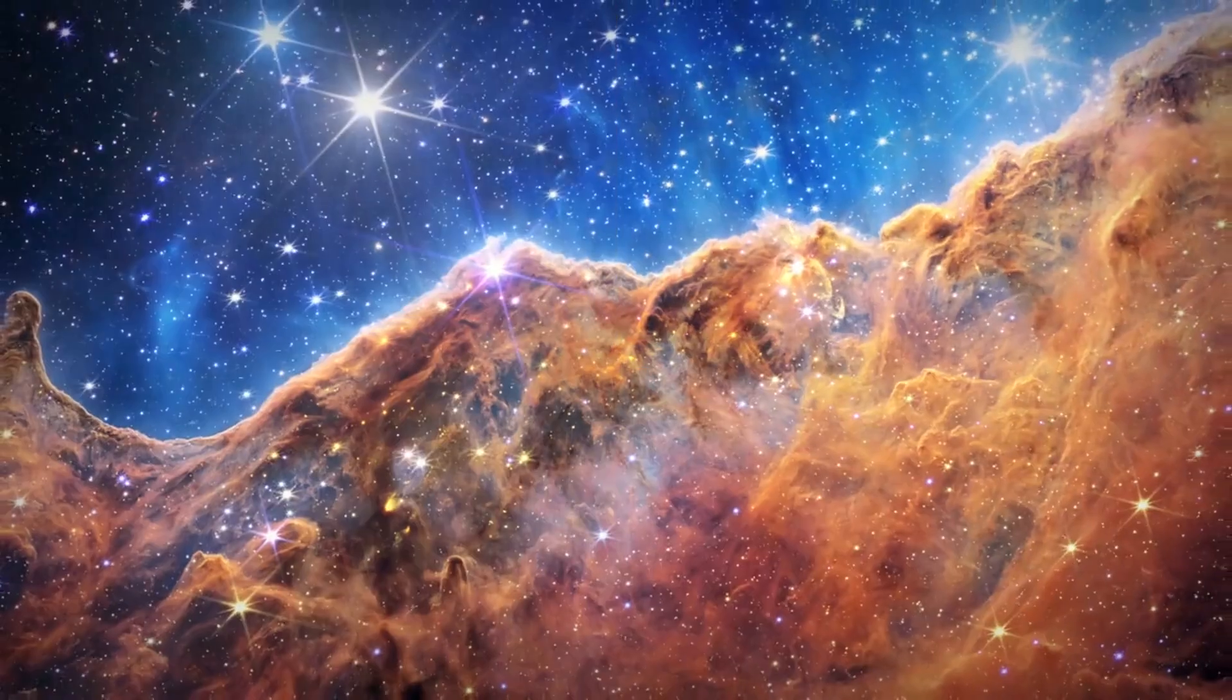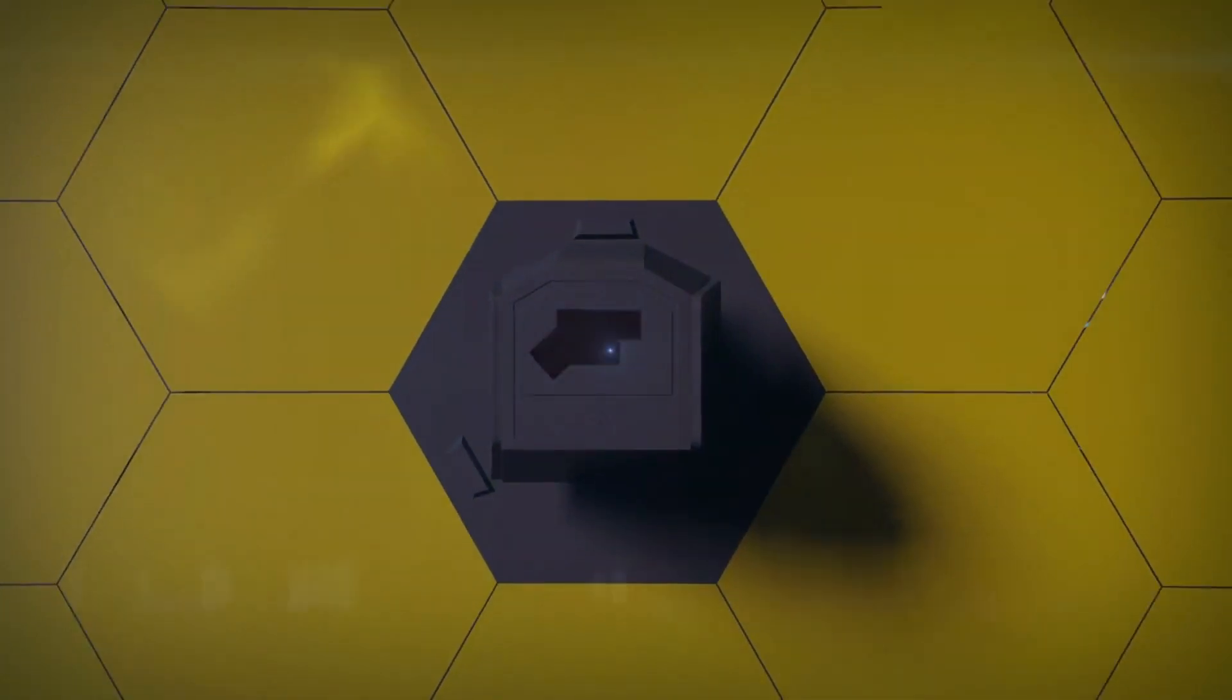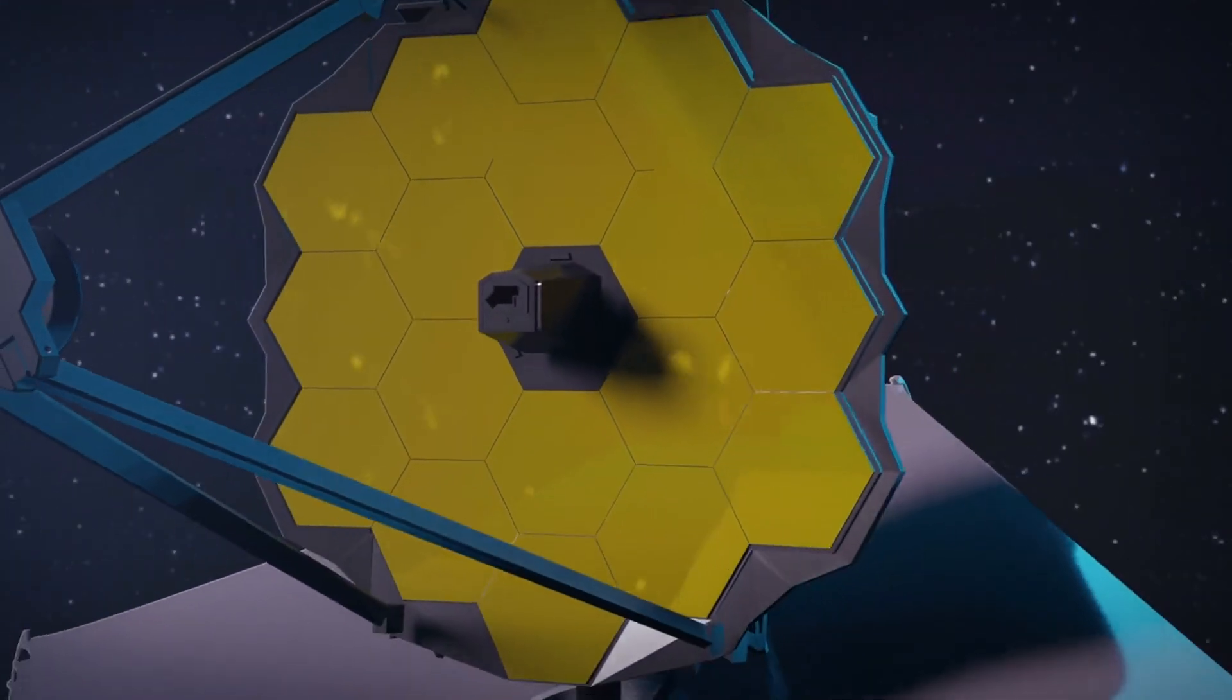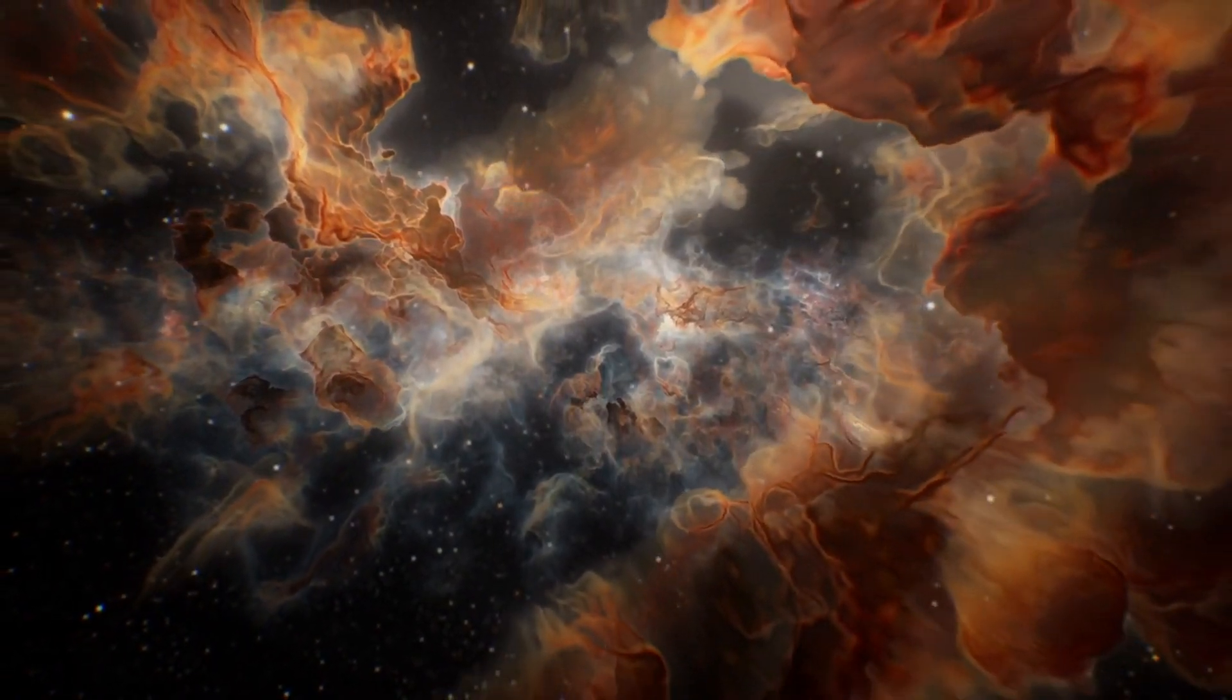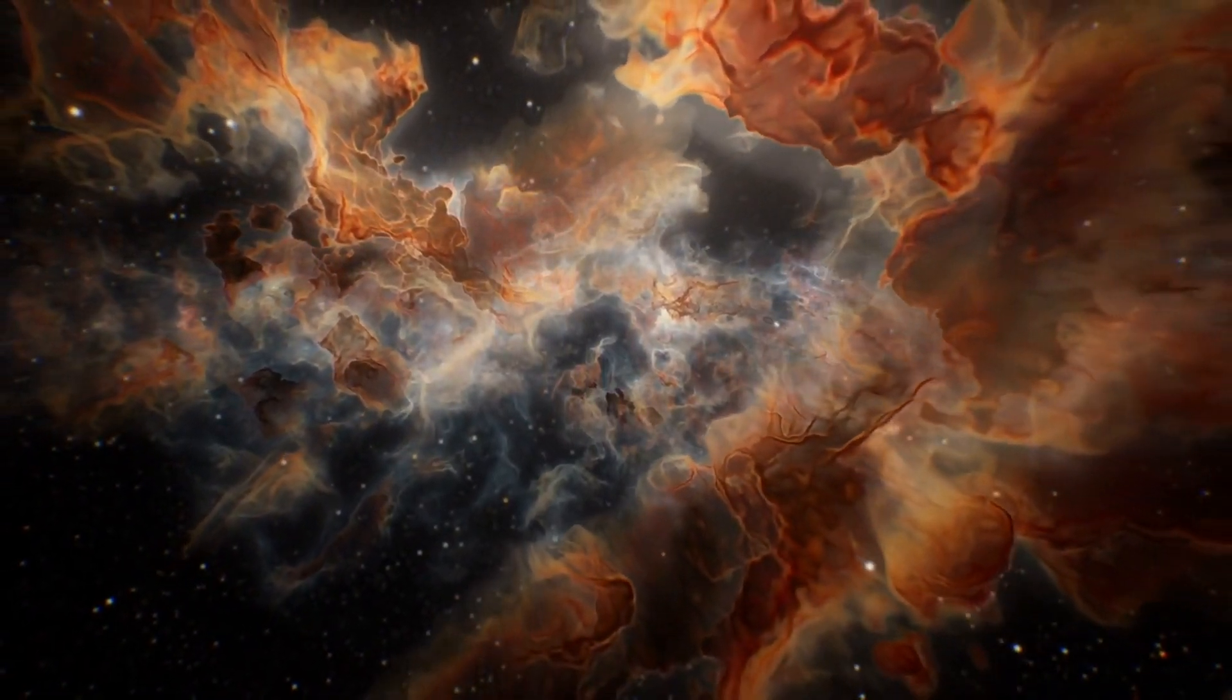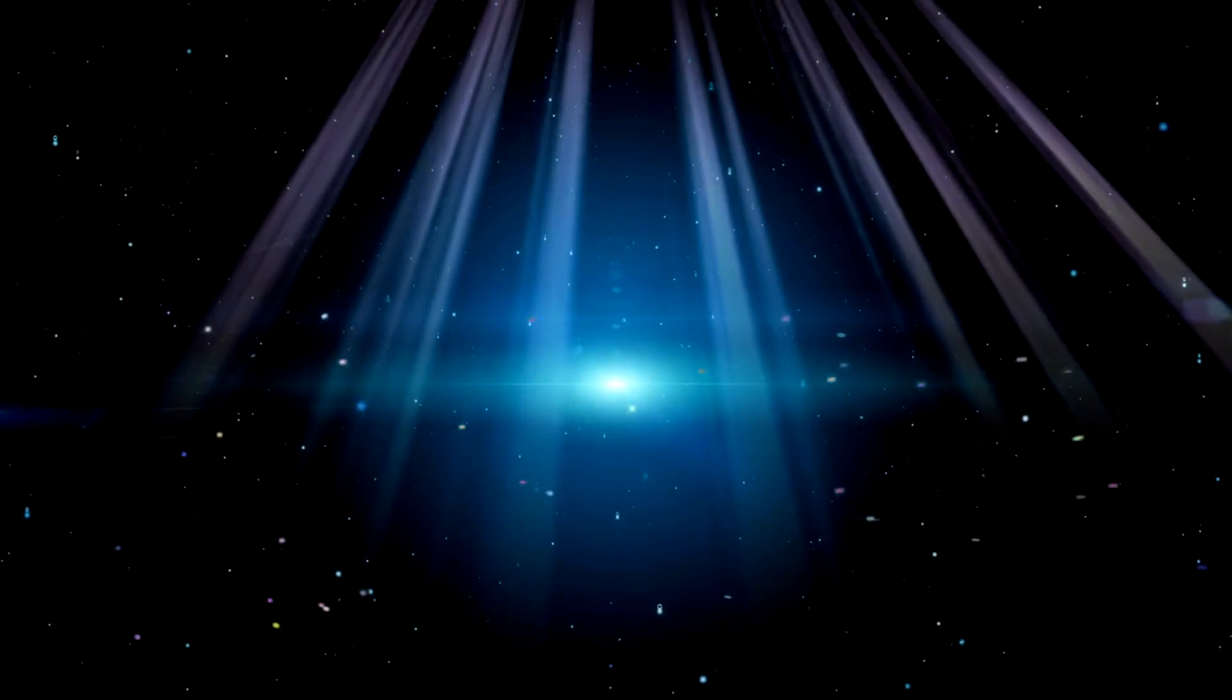Thanks to the James Webb Telescope, we now have detailed views of the Horsehead Nebula, a structure 1,300 light-years away. This iconic nebula, illuminated by nearby stars, has been observed in unprecedented detail, revealing how dust particles are being shaped by ultraviolet light, creating intricate patterns.